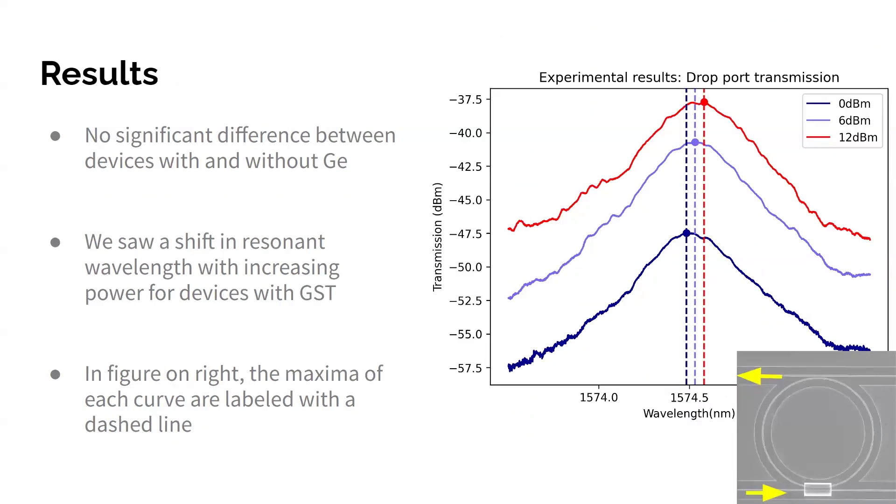So in terms of results, we didn't see a significant difference between our devices with germanium. However, when we increase the power of our laser, when we're looking at devices with GST, we saw that the resonance wavelengths of that system shifted. So right here, I basically just zoomed in on one of those peaks that I showed you before, and I've shown you three different input powers, with the lowest on the bottom and the highest on the top, and I've marked the maximum of each curve with a dot and a dashed line. And you can see that the maximum of these curves are actually shifting to the right.